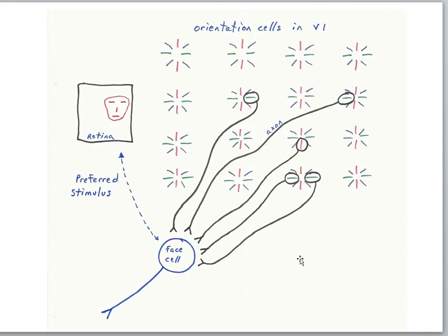Now, this is obviously a tremendous simplification of what's going on in brains. But at a conceptual level, this is a common notion of how we might begin to build a visual system in which cells start to have more complicated preferred stimuli.